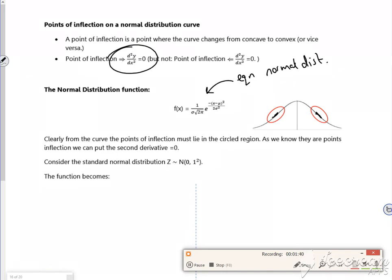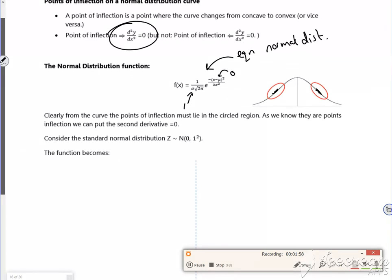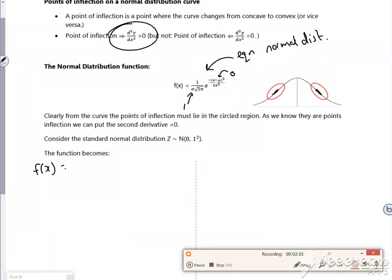Now then, this is going a little bit messy. If I set mu to be zero and sigma to be one, my f(x) becomes one over root 2π, which is just a number, e to the minus—now my sigma is one, my mu is zero—minus x squared over two. So that's the equation.